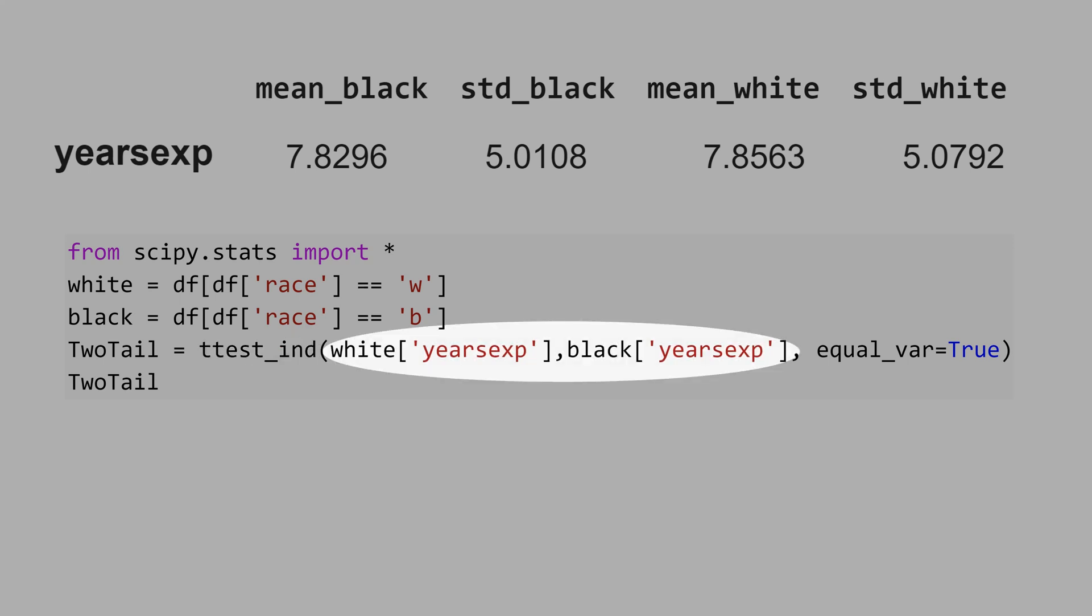Then, we have to pass the data. We pass here year of experience with the constraint white, and white is defined here, race equals w.